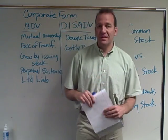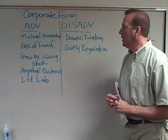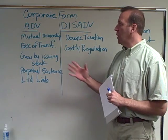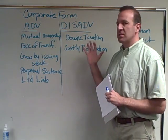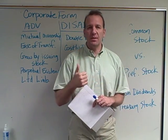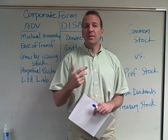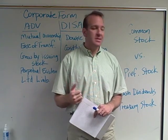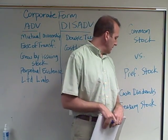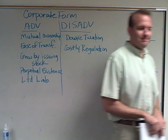Hope this isn't too hard — I think it's pretty straightforward. Just remember the corporate form, advantages and disadvantages, common stock versus preferred stock, cash dividends, and lastly treasury stock. Good luck.